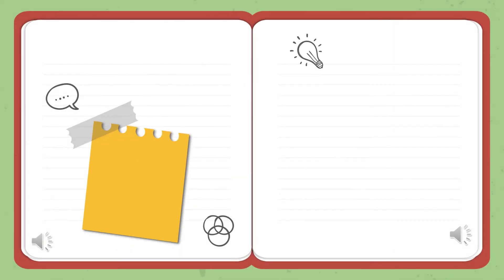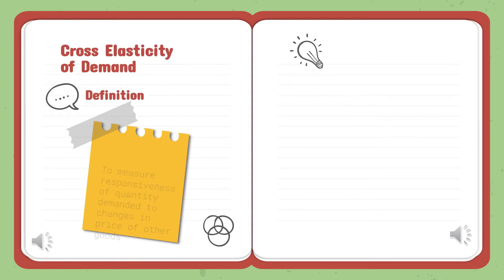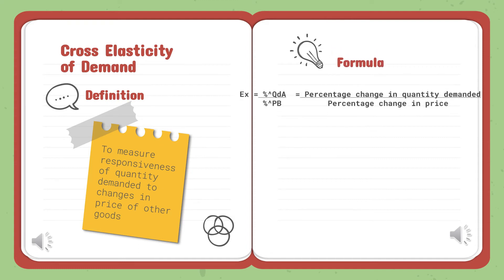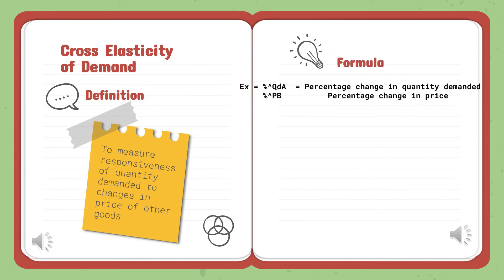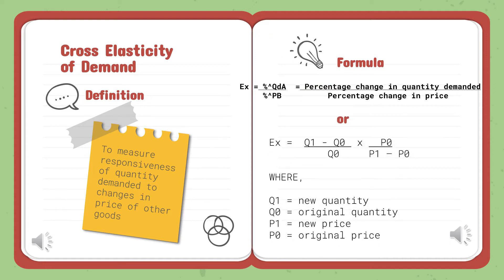Next is Cross Elasticity of Demand, which measures the responsiveness of quantity demanded to changes in the price of other goods. The formula used is the percentage change in quantity demanded divided by the percentage change in price of another good, which equals the cross-elasticity of demand. A second alternative formula is also available.